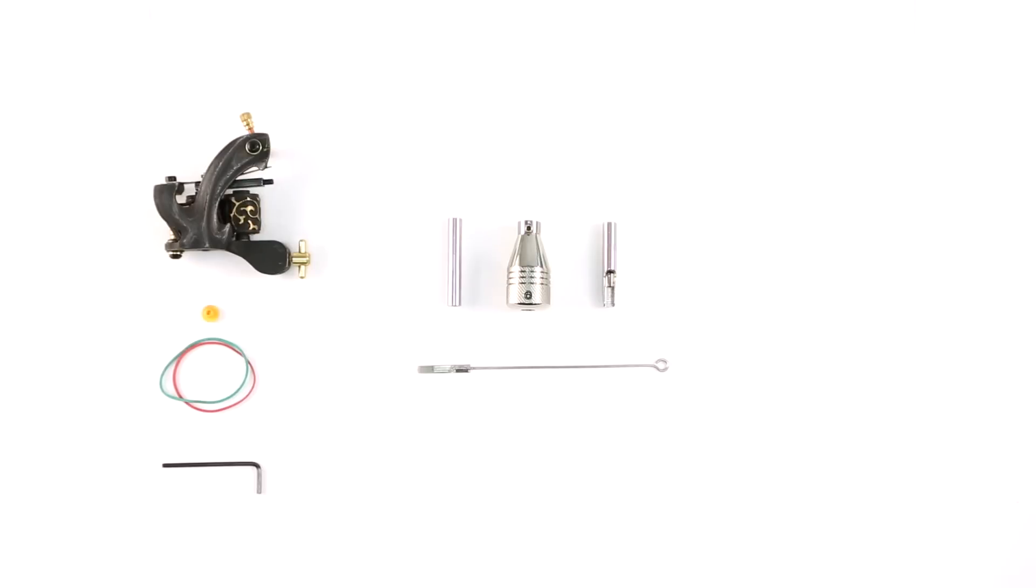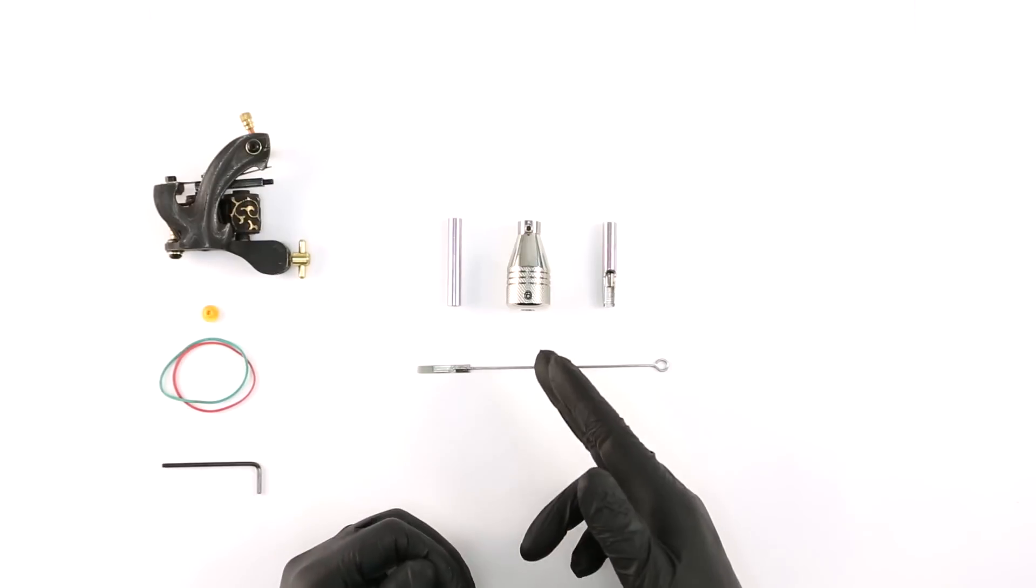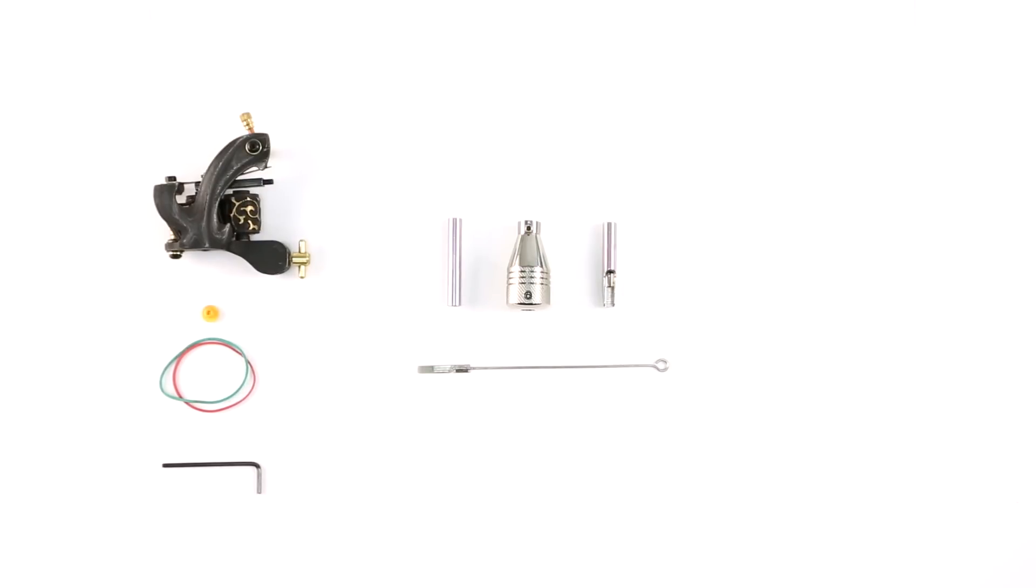This video shows how to set up a needle with a tattoo machine. We have a stainless steel stem, grip, and tip which are collectively called a tube.